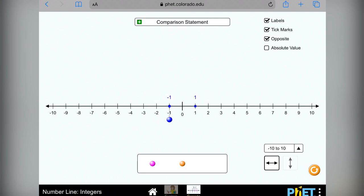Now I'm going to add another dot. Let's say I put this dot at negative 5. See its opposite at positive 5?